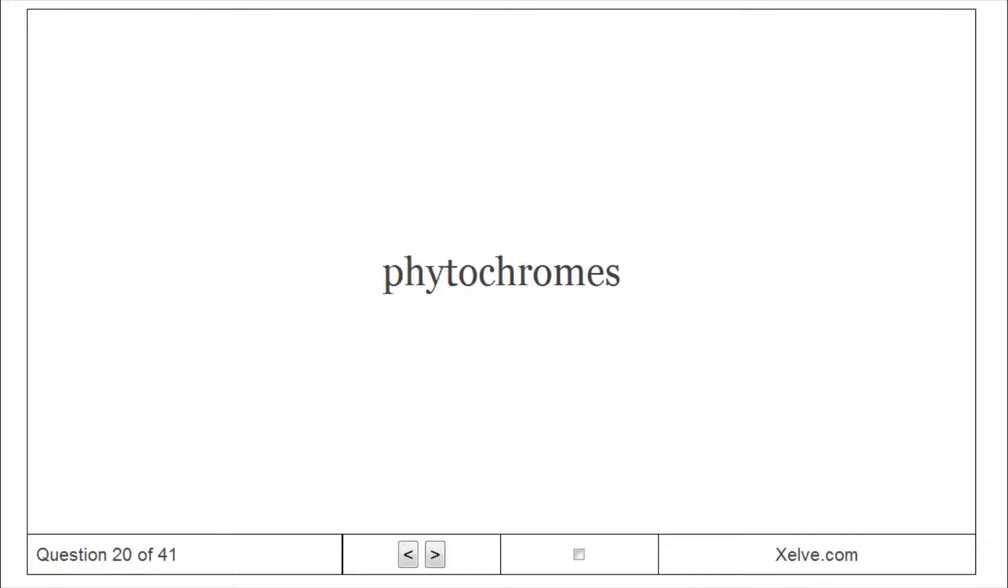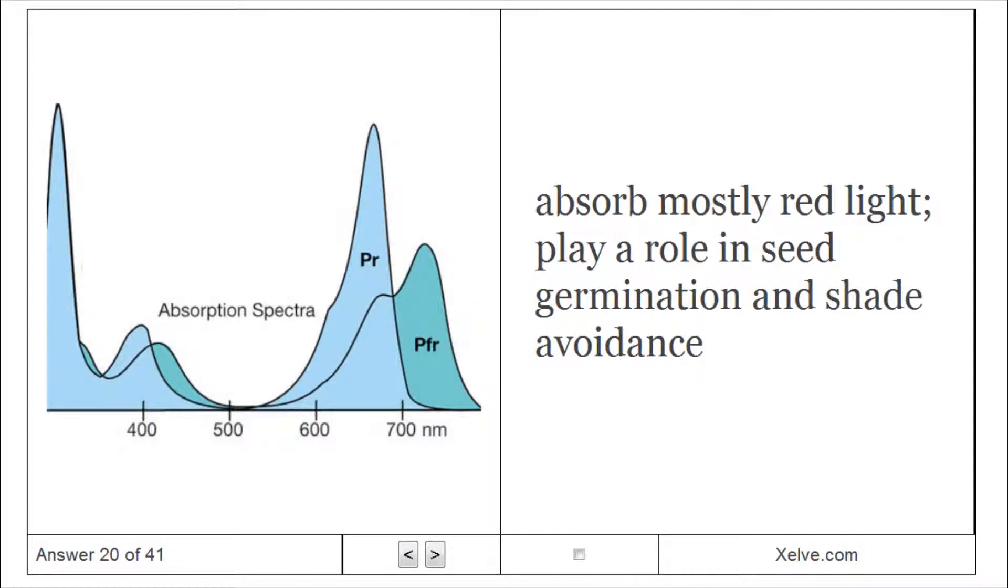Phytochromes: absorb mostly red light and play a role in seed germination and shade avoidance.